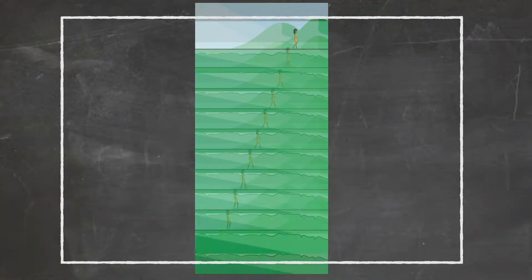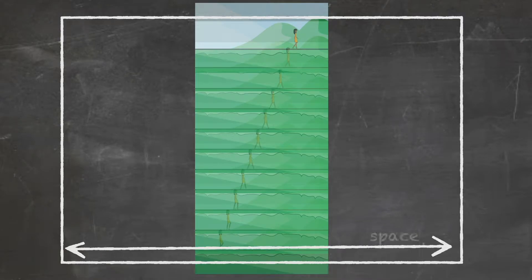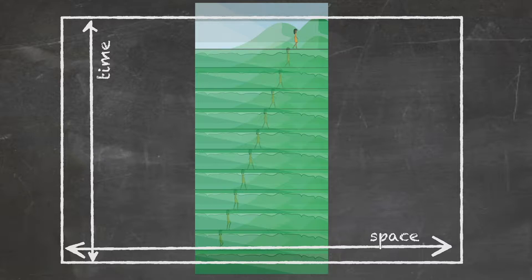shows a collection of events that all happened at the same time according to some observer — the observer with the camera. And when we stack those photographs up in a giant infinite stack, we're illustrating how space-time has a giant infinite stack of hypersurfaces of simultaneity.